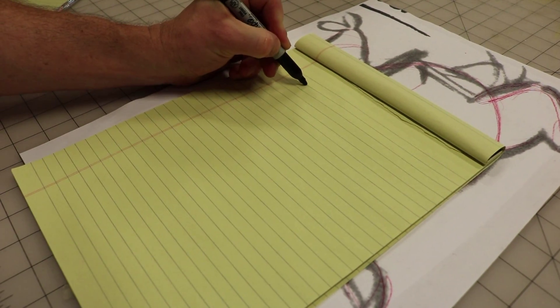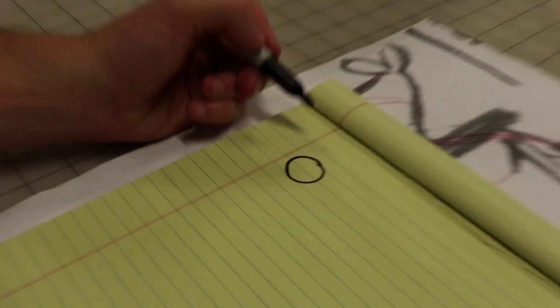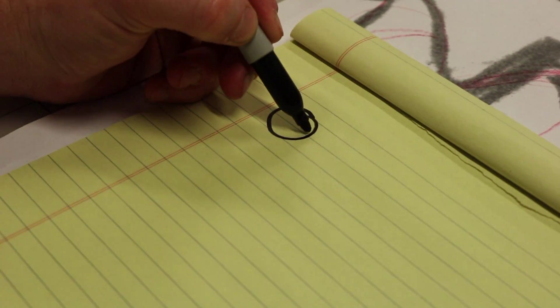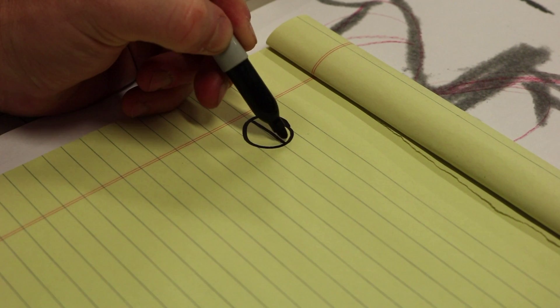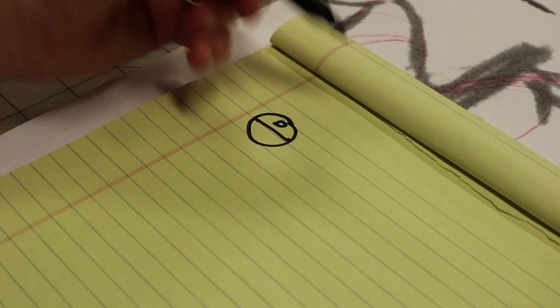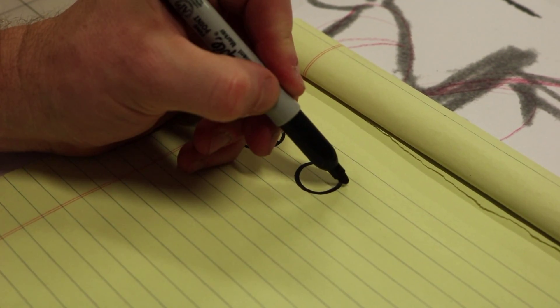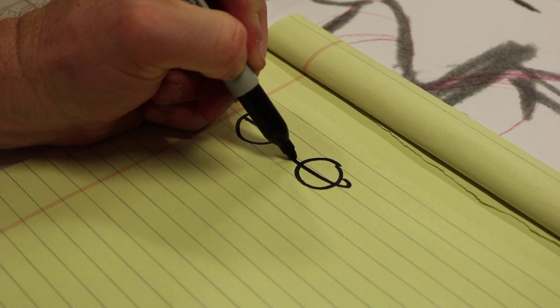First I'm going to just explain some terms. The first term is diameter. Diameter is the measurement from one end of a circle to the other. That's a diameter. There's circumference, and that's the measurement around the center of a sphere. That's a circumference.